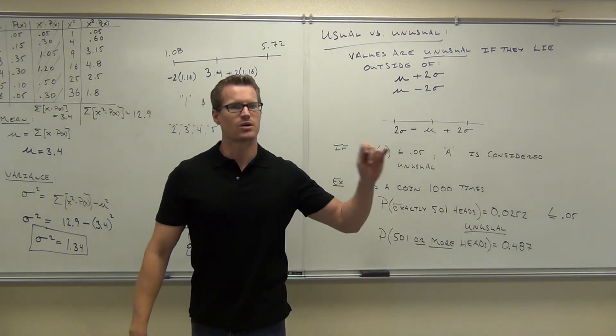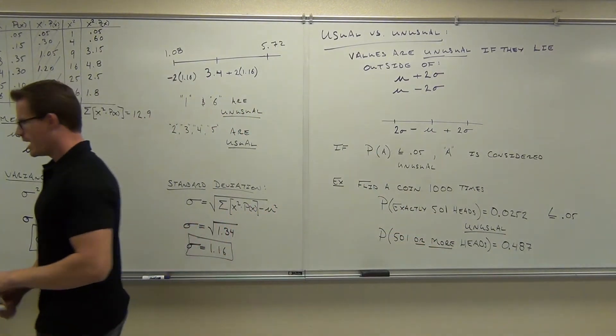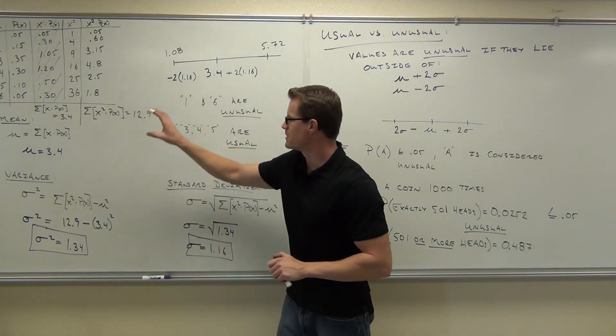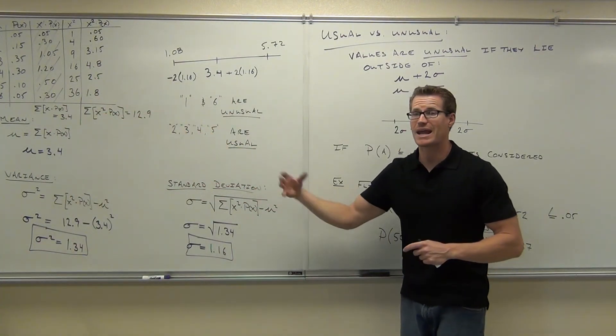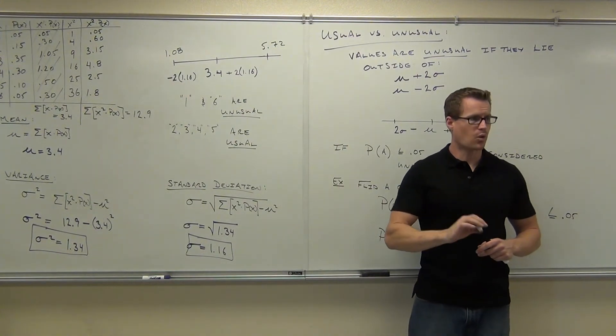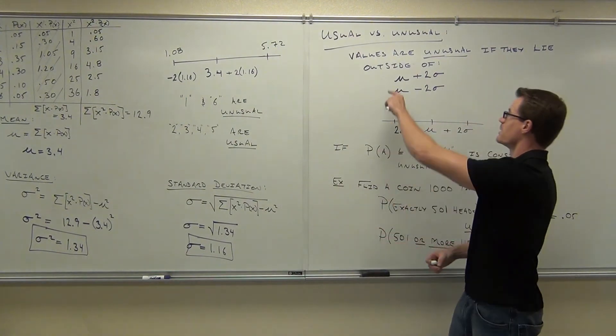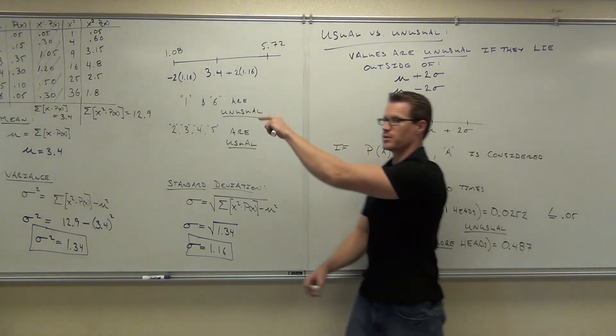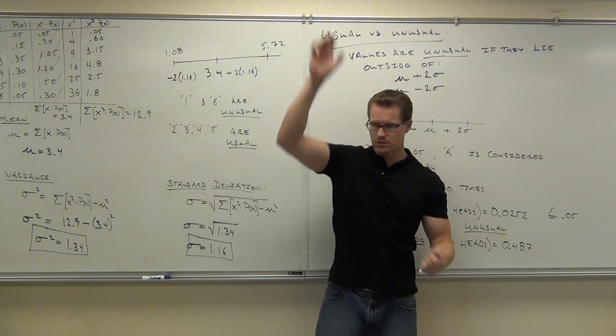This is going to lead us into our section 5.3. How many people understood the probability distribution, finding the mean, finding the variance and standard deviation, and how to tell whether something's usual or unusual two different ways, either by doing this or the probabilities themselves. Feel okay with that? Good deal.